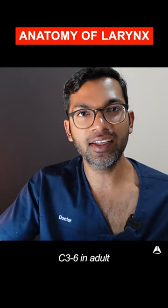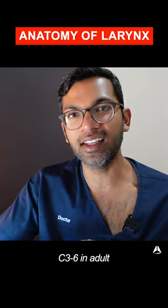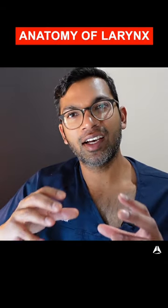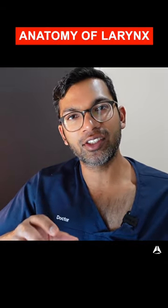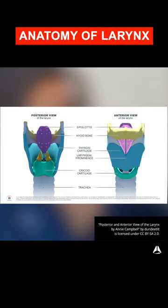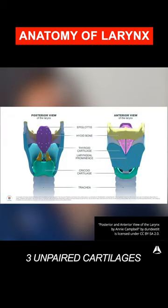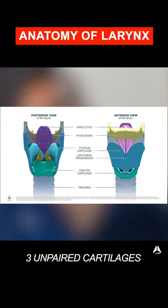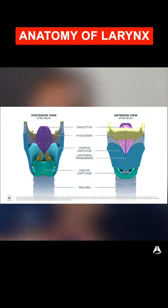The location of the larynx is C3 to C6 in the adult and C3 to C4 in the neonate. There are many different cartilage structures in the voice box, or larynx, and you can classify them as three unpaired and three paired. The three unpaired are the thyroid cartilage, the cricoid cartilage — which we refer to a lot when doing cricoid pressure and looking for the cricothyroid ligament — and also the epiglottis.